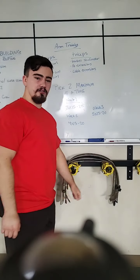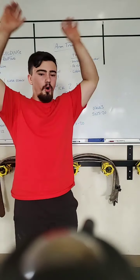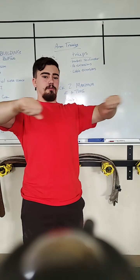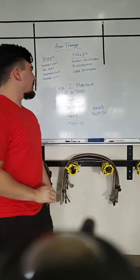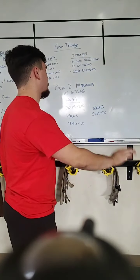Next is a dumbbell extension. Now these can be done in multiple variations. You can do them overhead. You can lay on a bench and do them here. You can lay on the ground and do them here. An extension is something where your elbow is straightening out with the dumbbell.